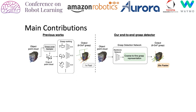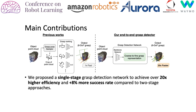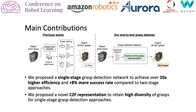To make 6-degree-of-freedom grasping faster, we propose a single-stage grasp detection network called GDN, which is more accurate and much faster than previous two-stage methods. We also propose a novel coarse-to-fine representation to achieve both high accuracy and high diversity of grasps for our single-stage grasp detector.